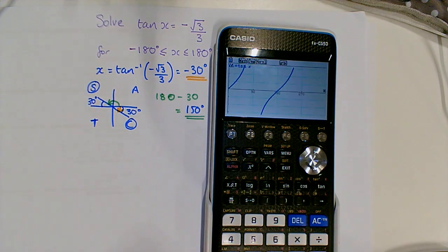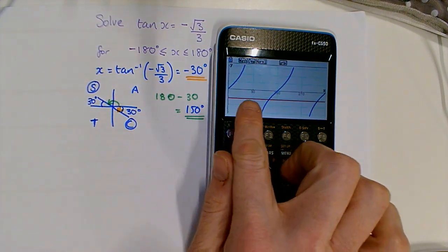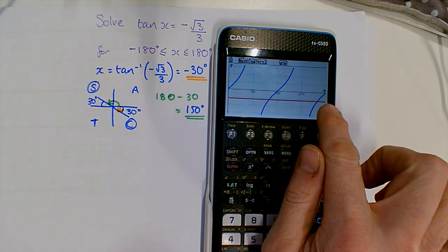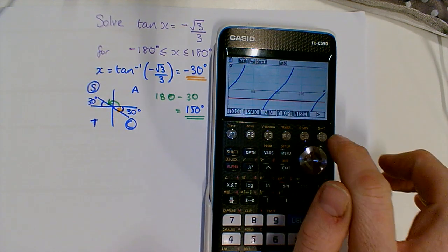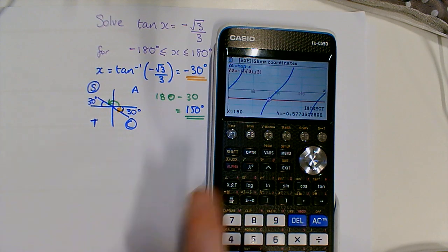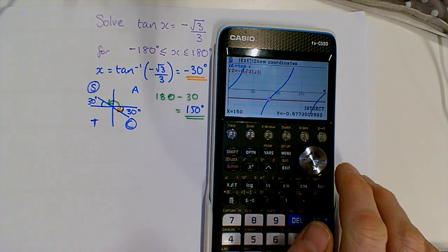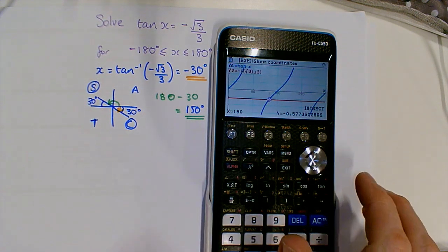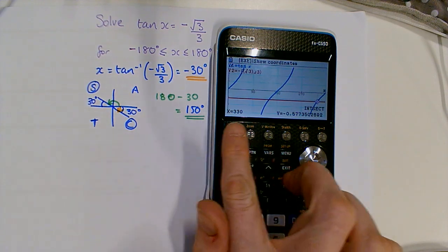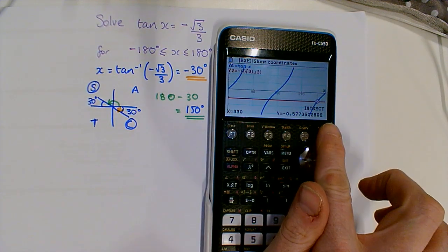Okay, and we'll draw those and we can see that we've got two solutions there. To find them, we do g-solve intersect. That gives us the 150, and this will give us another one, but we don't want these values because these are the values between zero and 360.